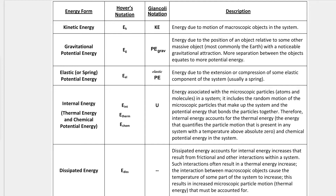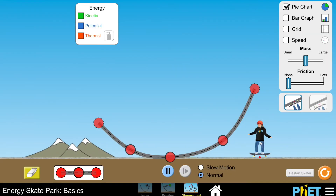Dissipated energy is kind of a catch-all for thermal energy increases due to frictional effects or vibrations — things that cause the particles in a system to move faster. It really is a subset of thermal energy or internal energy. In a lot of cases we'll use dissipated energy to mean an increase in internal energy, again typically due to frictional effects or vibrations.